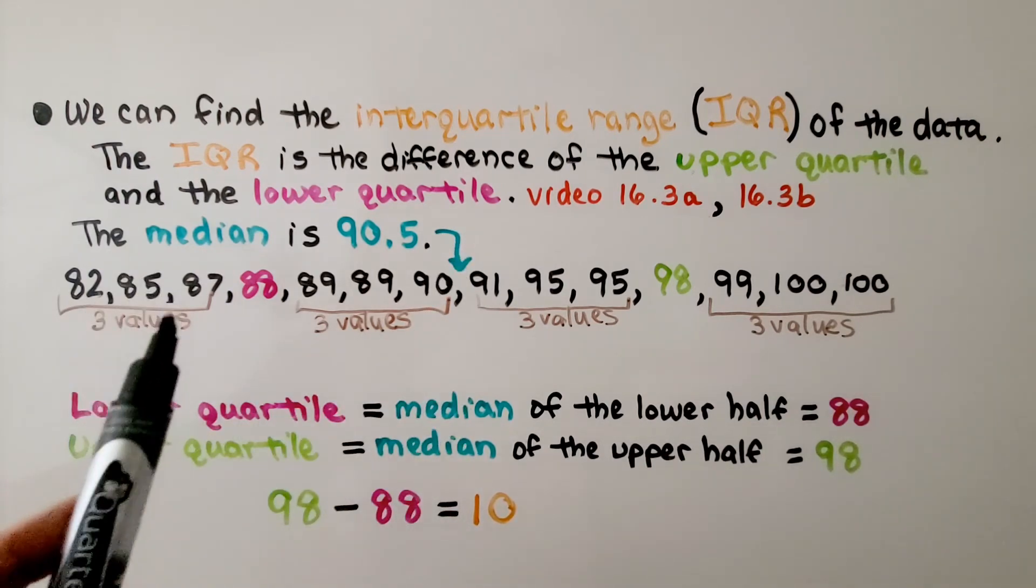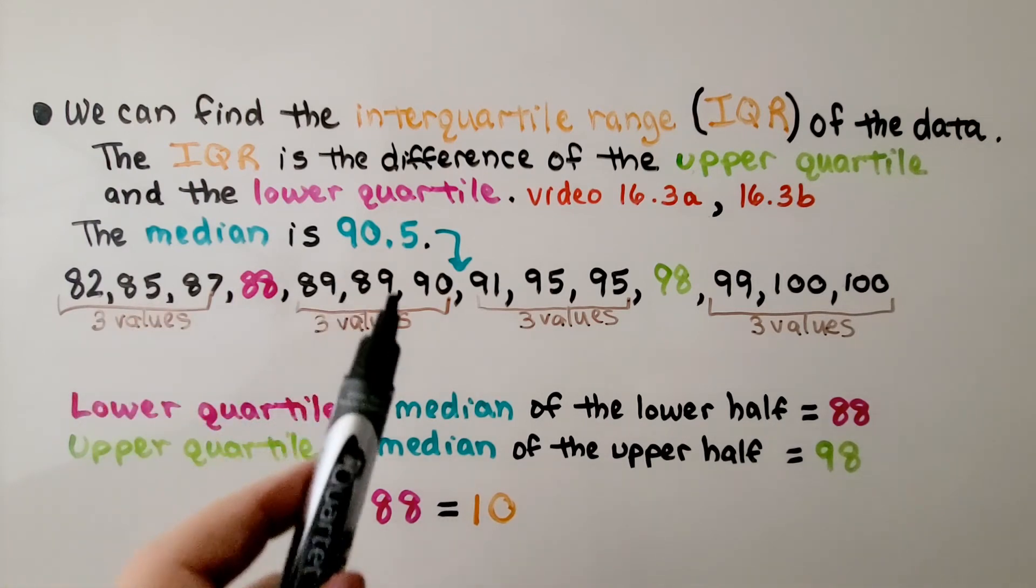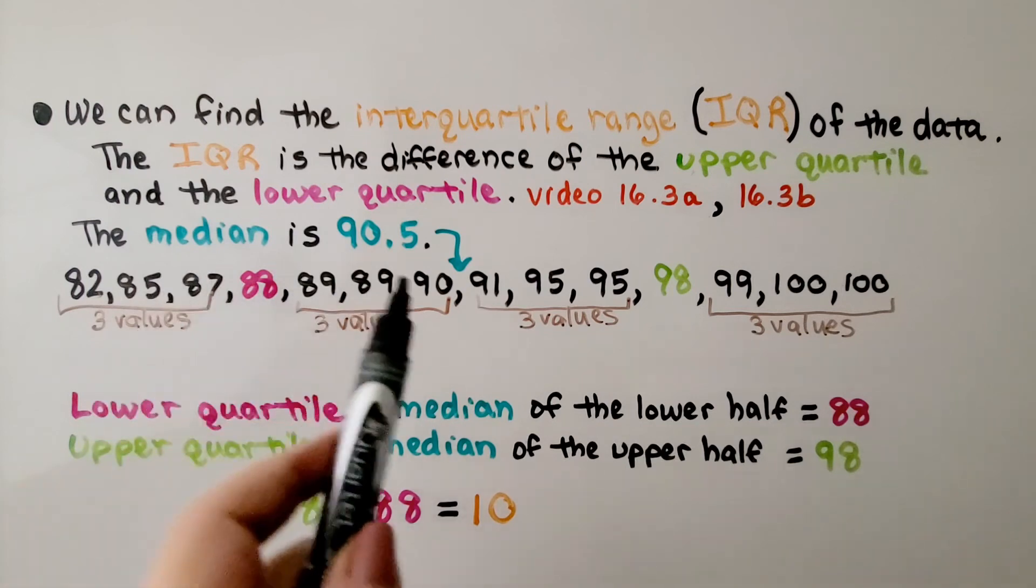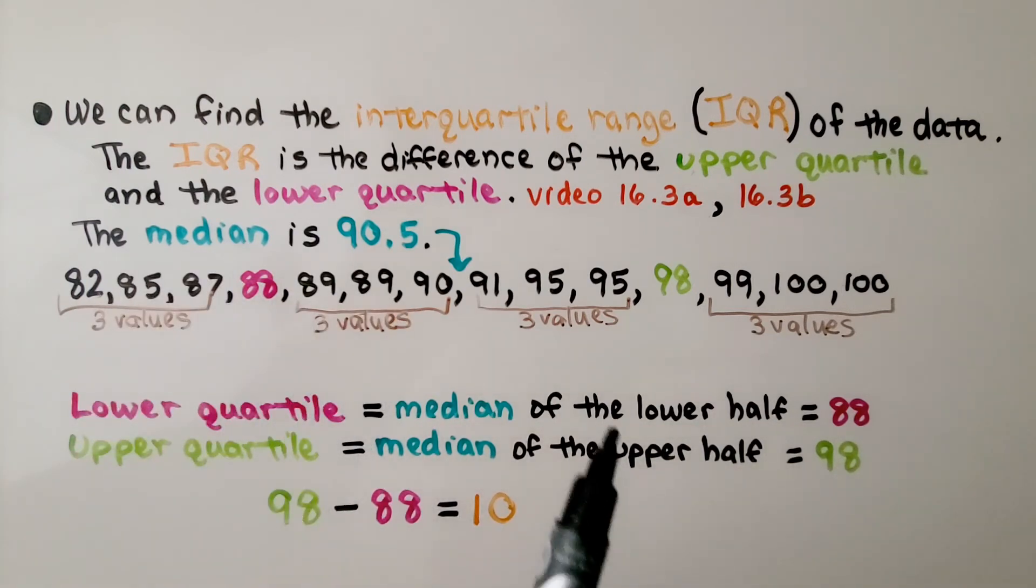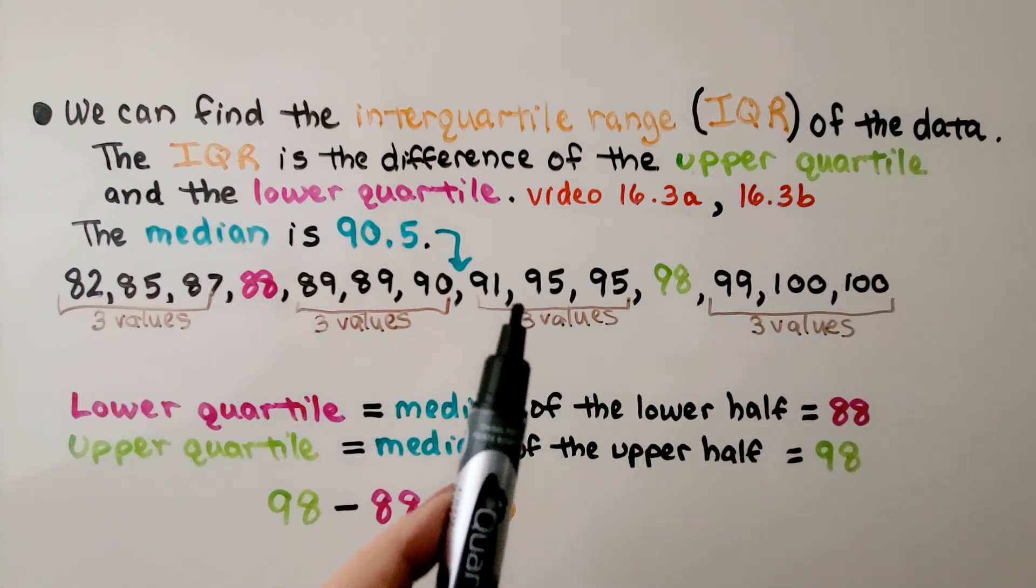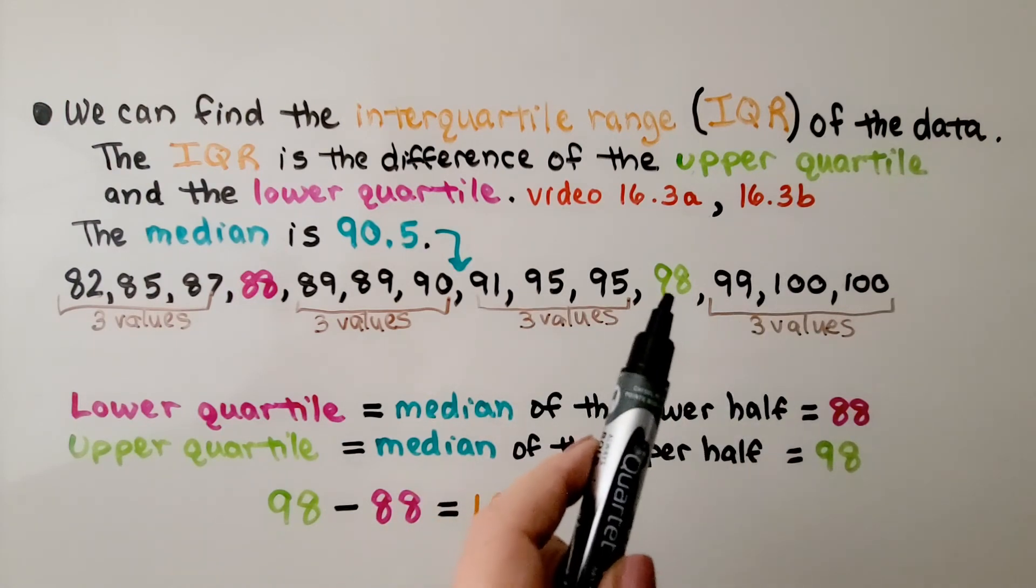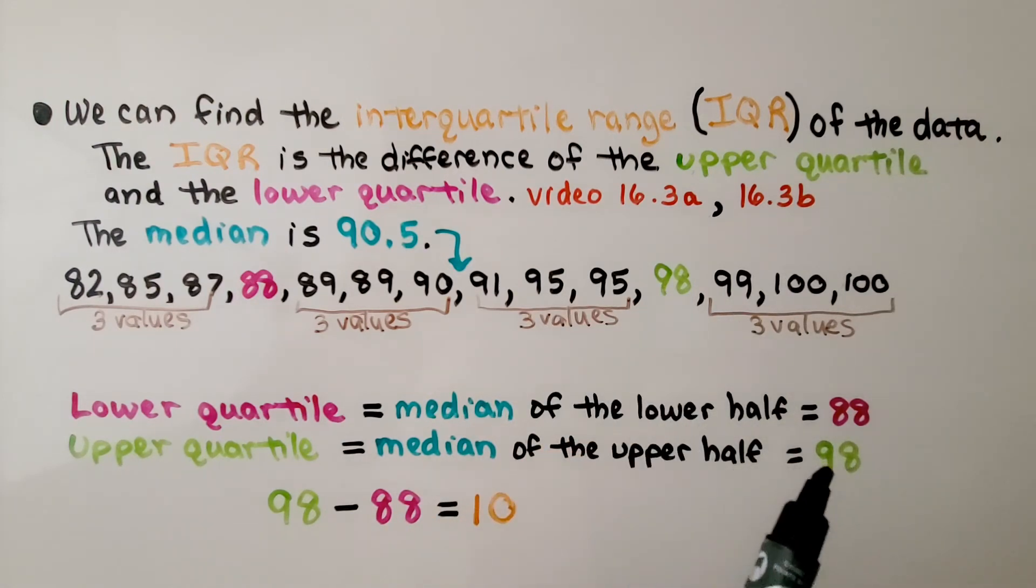We have 3 values on this side of 88, and 3 values on this side of 88. So we know 88 is the median number of this lower half. For the upper half, we have 3 values on this side of 98, and 3 values on this side of 98. So we know 98 is the median of the upper half. We do the upper quartile minus the lower quartile. We get 10 when we do 98 minus 88. We know the IQR is 10.